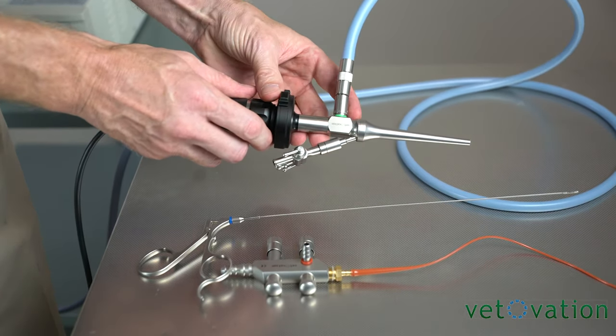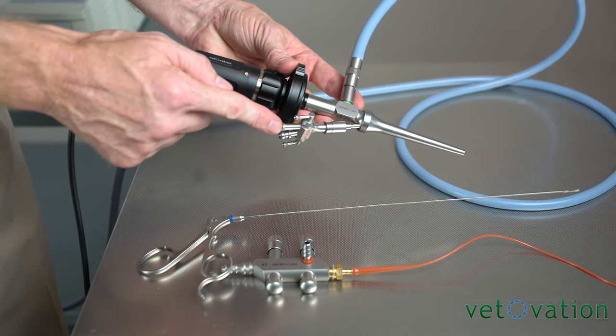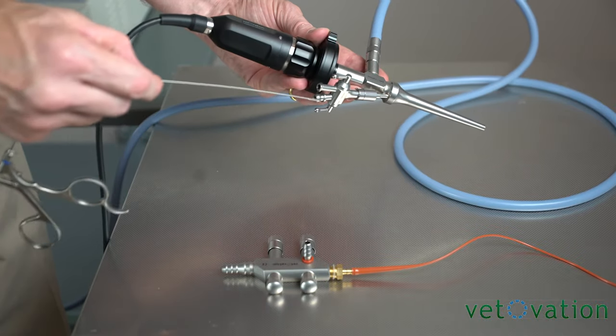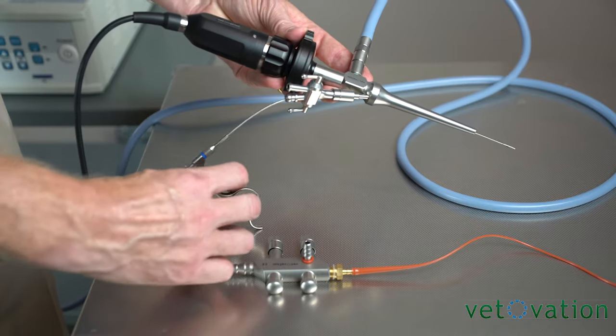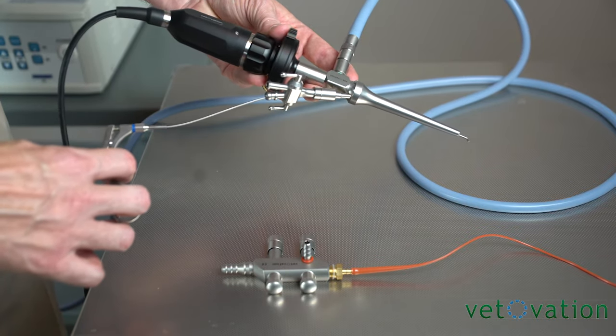Now you have a video otoscope that has a working channel. You can attach a standard IV bag to this side to be able to flush and run fluids into the ear or you can attach an instrument that you can now remove wax, hair or take a biopsy.